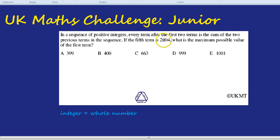If the fifth term is 2004, what is the maximum possible value of the first term? Options: 399, 400, 663, 999, or 1001.